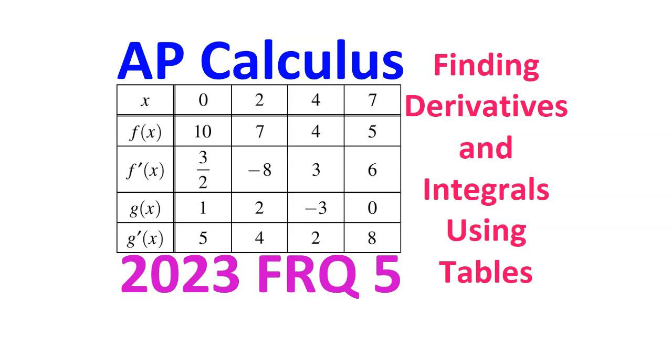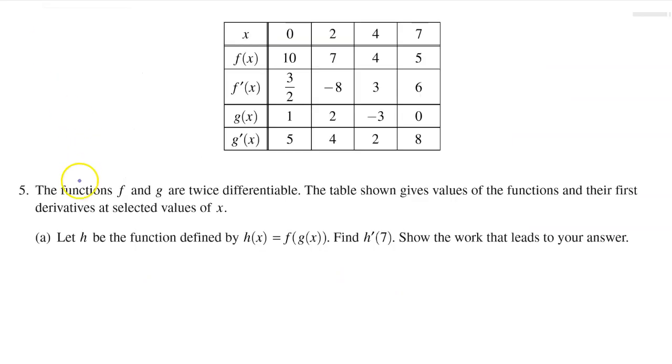In this video, I will walk you through free response question number 5 from the 2023 AP Calculus exam. This problem is primarily about finding derivatives and integrals using tables. The functions f and g are twice differentiable. The table shown gives values of the functions and their first derivatives at selected values of x.